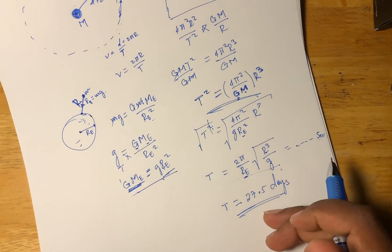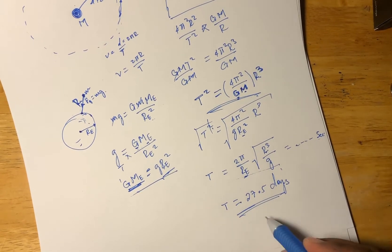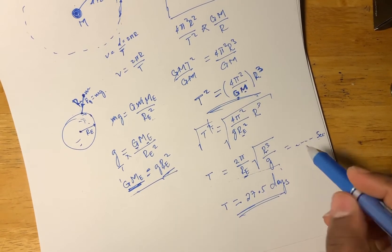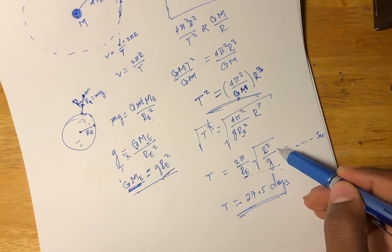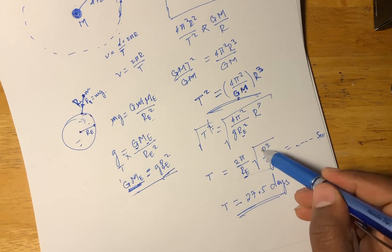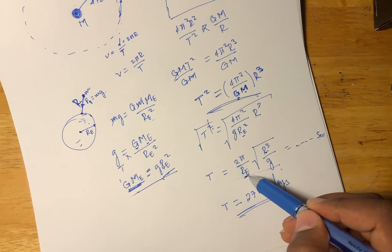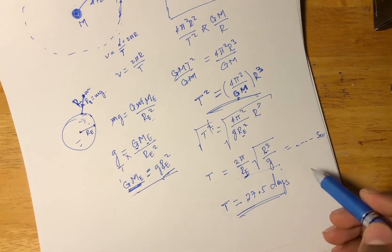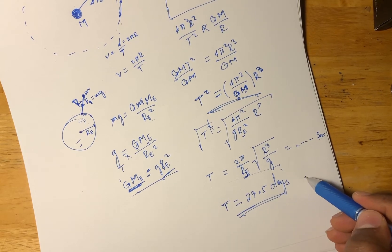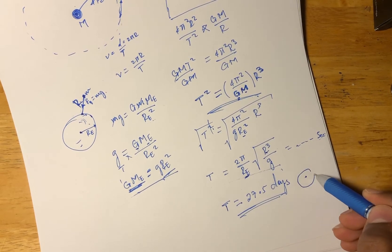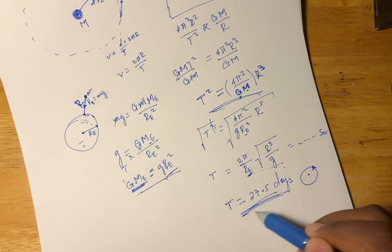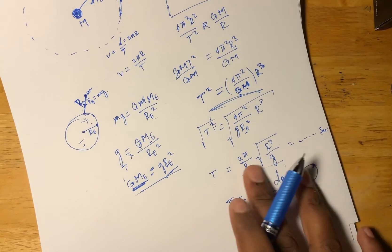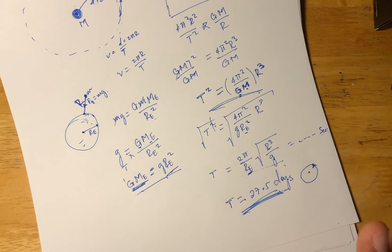We have quantitatively proved it. Given the distance from the Earth to the Moon, the acceleration due to gravity, and the radius of the Earth, you can calculate the period of the Moon. It matches — that is one of the beauties of Newton's Law of Universal Gravitation.